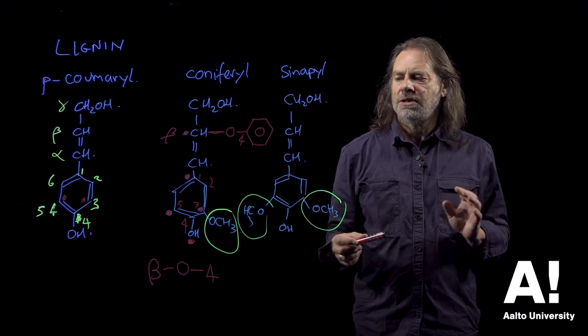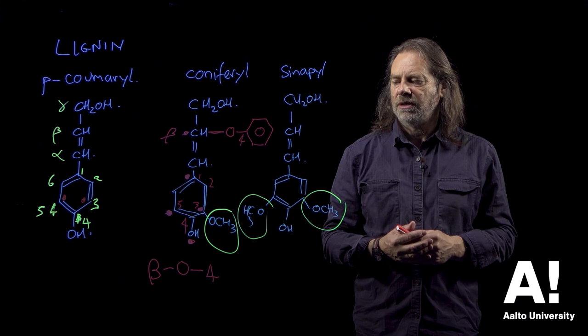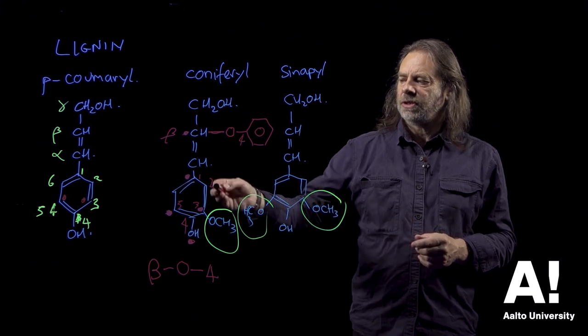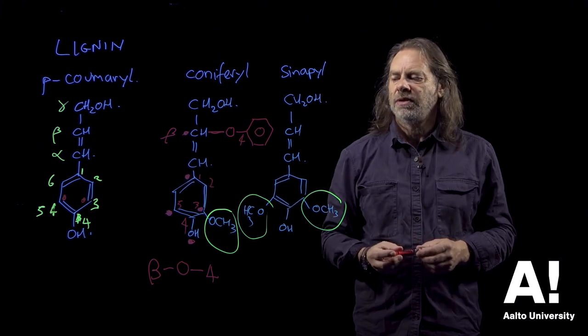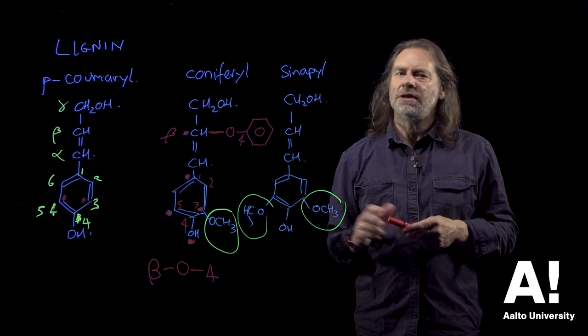So crosslink density is related to the rigidity of the lignin macromolecule. And by controlling the ratio of these three components, nature is able to control the material properties of the lignin.